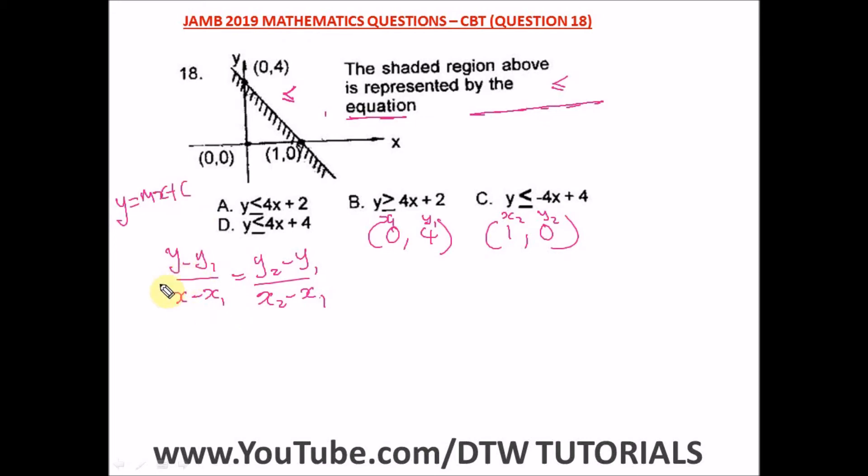We have y minus y₁, which is 4, over x minus x₁, which is 0, equals y₂, which is 0, minus 4, over x₂, which is 1, minus 0.